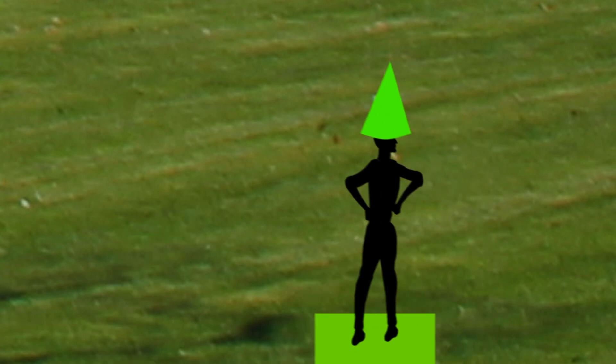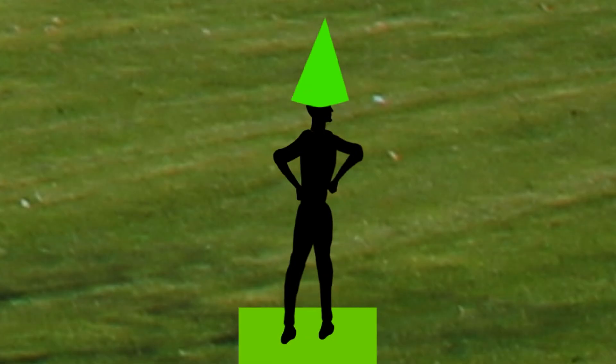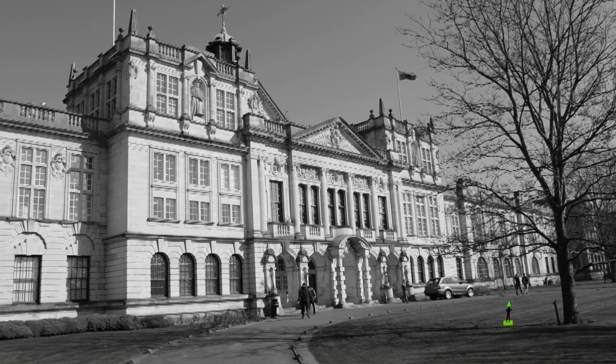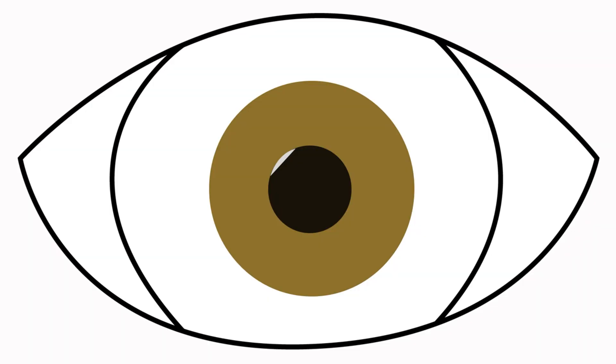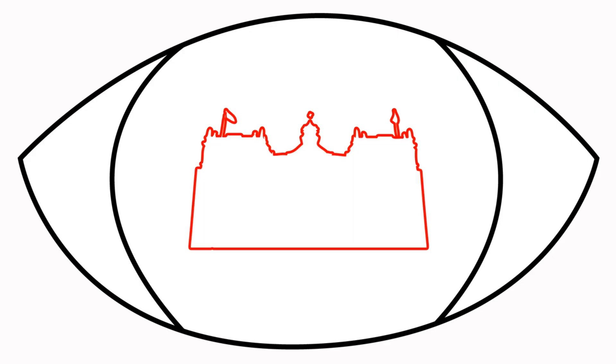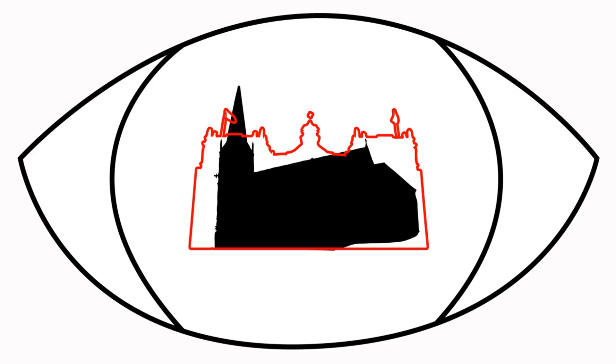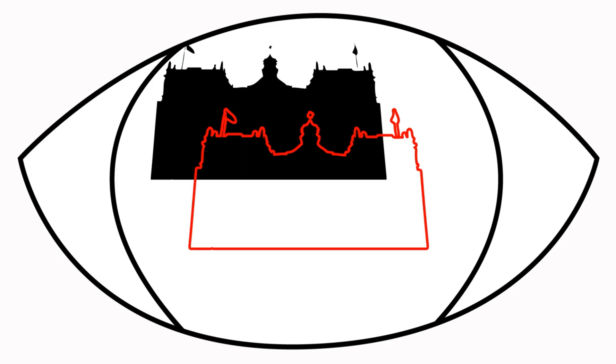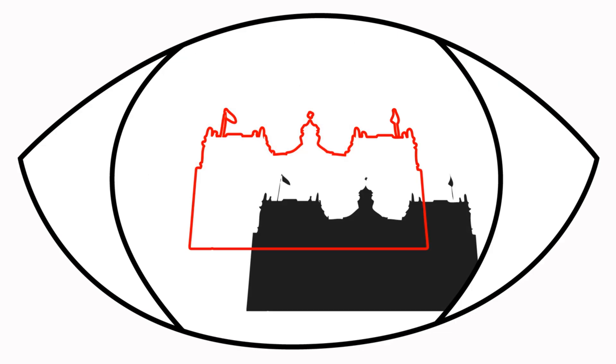The brain only knows about different colors by looking at relative activity across the three types of cone. If you moved your eyes when looking at the black and white photo, the color afterimage disappears. This tells us that the structure of the scene you use to see the afterimage must be similar to the structure of the scene you used to tire the cones out. Any old building won't do, and the same building placed in different positions on the retina won't do either. This may explain why we don't see color afterimages all the time, because our eyes are continually moving around.